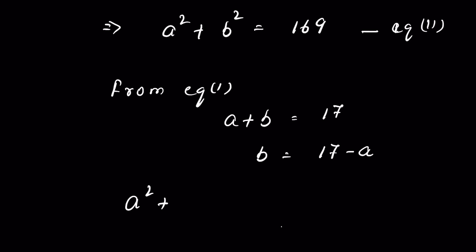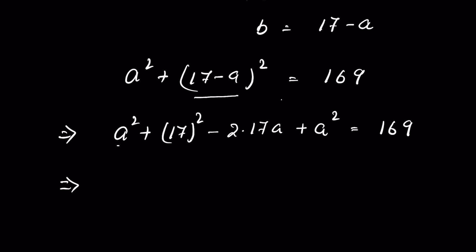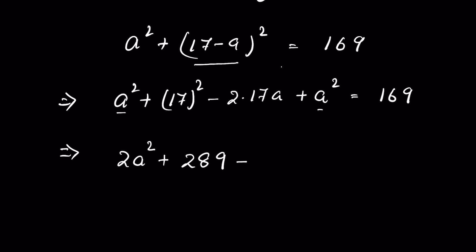a² + (17 - a)² = 169. This is in the form (a - b)², so a² + 17² - 2(17)a + a² = 169. a² + a² = 2a². 17² = 289, and 17 × 2 = 34a. So we have 2a² + 289 - 34a = 169.